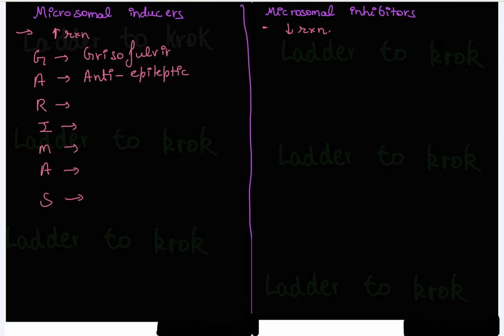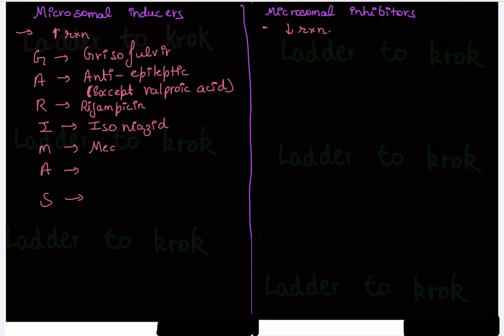A stands for anti-epileptic drugs — remember, except valproic acid; all other anti-epileptic drugs are microsomal inducers. R stands for Rifampicin. I stands for Isoniazid. M stands for Meat — like goat, beef, chicken. A stands for Alcohol — chronic alcohol intake. S stands for Smoking. All of these are microsomal inducers and will increase metabolism.